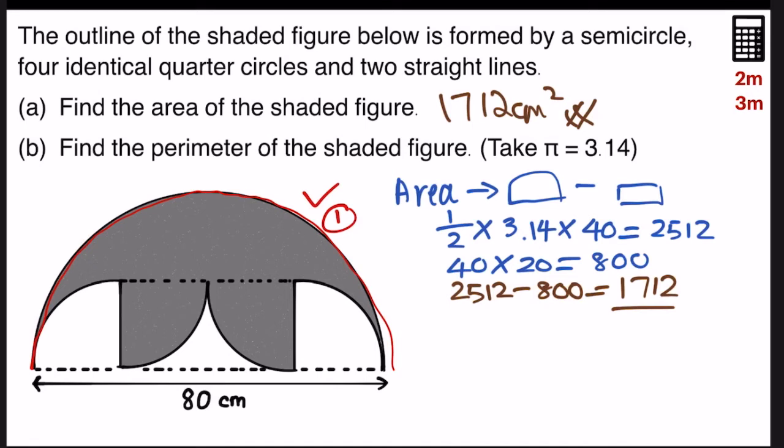Second, if we were to combine this 4 quarter circles, 1 quarter here, and the second quarter, the third quarter, and the last quarter here, if we combine all of them together, it actually forms a complete circle. So we're going to find that complete circle.